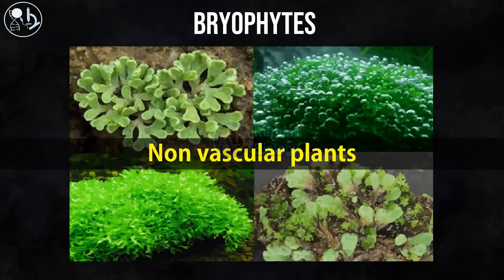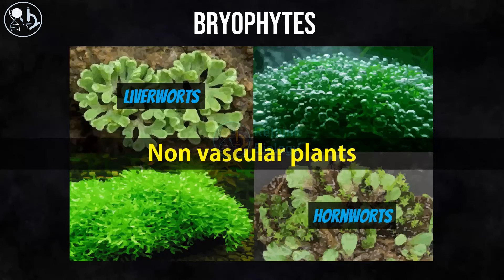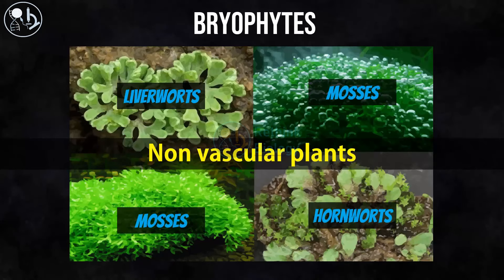Bryophytes are a group of non-vascular plants which lack leaves, stem, or root. Examples include liverworts, hornworts, and mosses. All of them lack a well-developed vascular system.